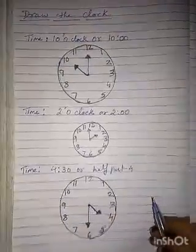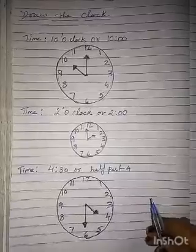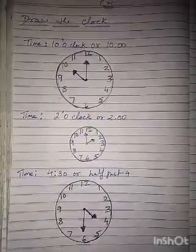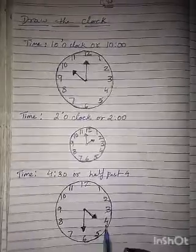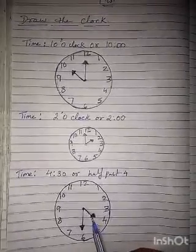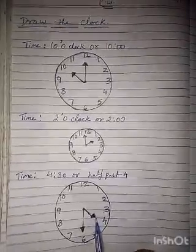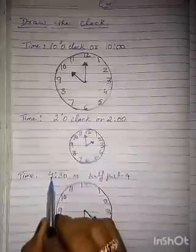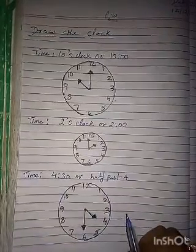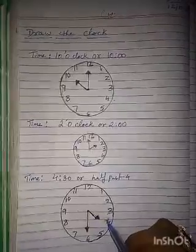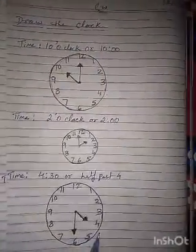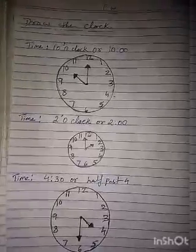Now draw 4:30. 1 hour equals 60 minutes, so half of 60 is 30 minutes. For half past, the minute hand will be at 6. The hour hand will be at 4. So short hand at 4 and long hand (minute hand) at 6. 4:30 means 4 hours 30 minutes. Half past means 30 minutes have passed — half past 4. Hour hand at 4 and minute hand at 6. Children, draw the clock neatly and clearly.